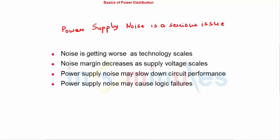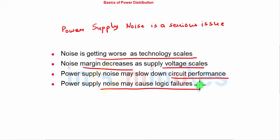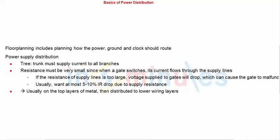So power supply noise is a serious issue now because noise is getting worse as the technology is scaling down. Noise margin decreases now because of the supply voltage scaling. Power supply noise may overall slow down the circuit performance because it leads to degraded current at the output. Power supply noise may also cause logic failures. We saw that in case of simultaneous switching noise if one block is triggering the next one it will lead to device failure also.